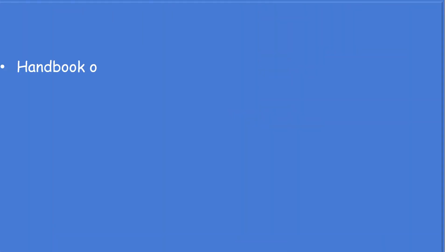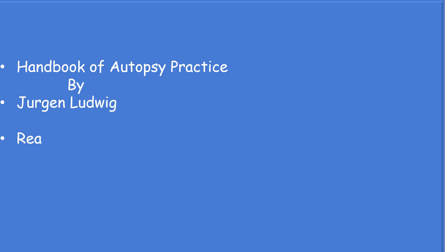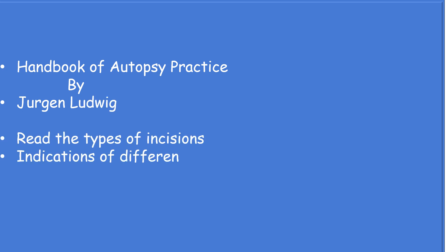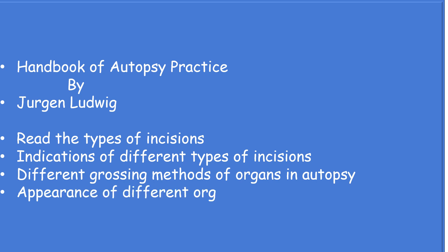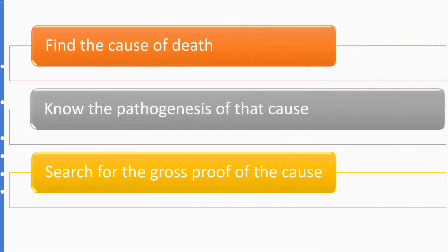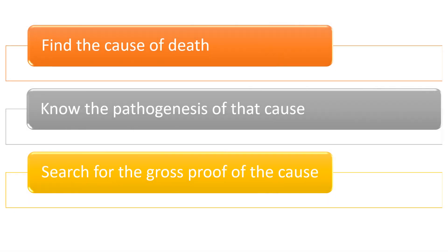Next, read the Handbook of Autopsy Practice by J. Ludwig. Some teachers have an old book called Autosafire — if you get it, read the dissection methods from it. Also note the types of incision, their indications, different grossing methods for autopsy, and the appearance of different organs in different diseases. Note the cause of death, the pathogenesis of the cause, and the gross findings which are proof of that cause.